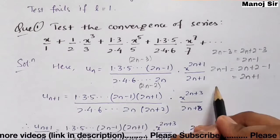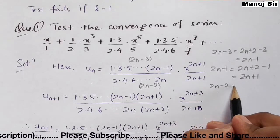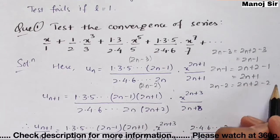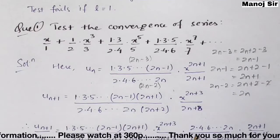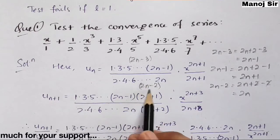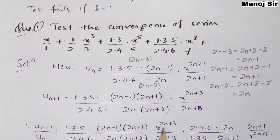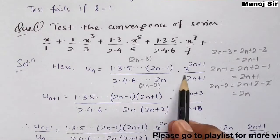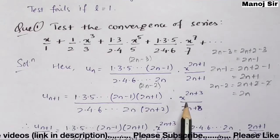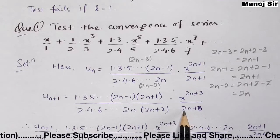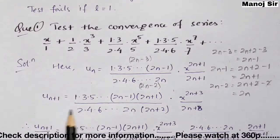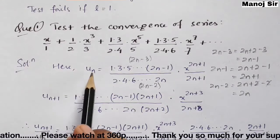So un+1 = [1·3·5·...·(2n−1)·(2n+1)] / [2·4·6·...·(2n)·(2n+2)] times x^(2n+3) / (2n+3). This completes our expression for un+1.